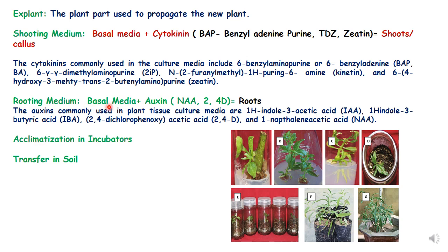The other medium is rooting medium, which is basal medium supplemented with auxin. Auxin can be 2,4-D, naphthalene acetic acid (NAA), or IBA (indole butyric acid). Any of the auxins can be utilized for inducing roots in the shoots once they are formed. In the pictures, you can see a nodal explant giving rise to shoots in a shooting medium, and these shoots are transferred to rooting medium supplemented with auxin to form roots, and then the whole plant is formed and transferred to soil.